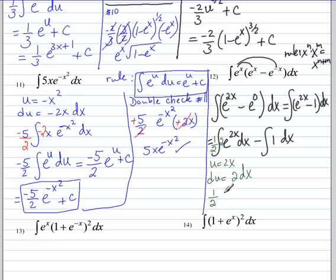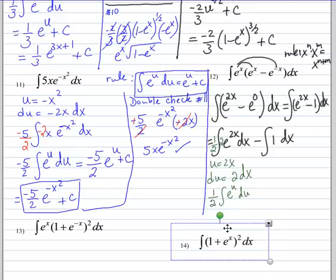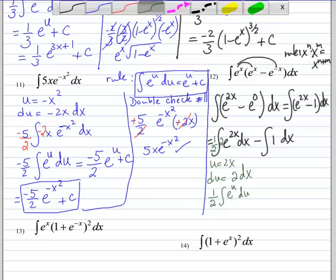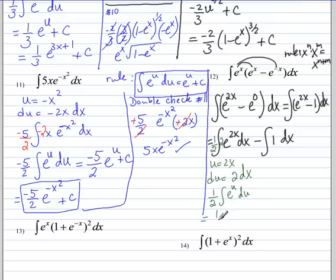And that's where that 1 half comes from. So, the question can be rewritten as 1 half, the 2 dx is du, and then e to the u. So, that turns out to be 1 half e to the u. I'm going to skip that step. u is 2x. And then, the antiderivative of 1 is x, and then plus c.